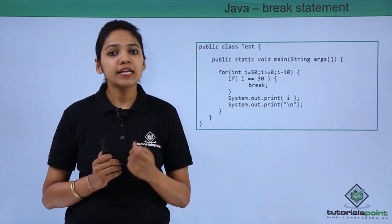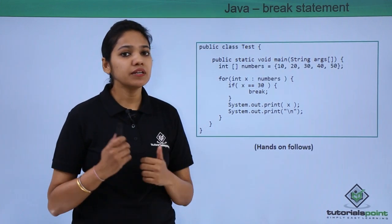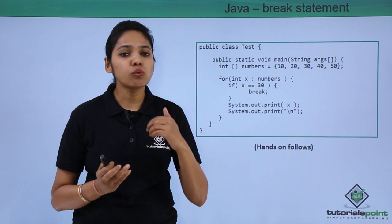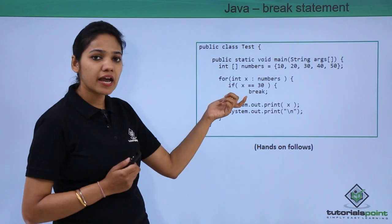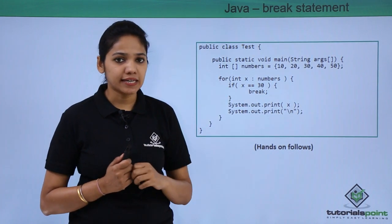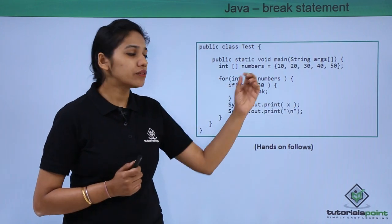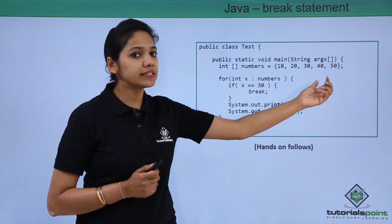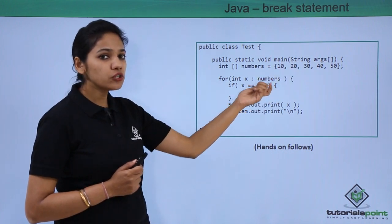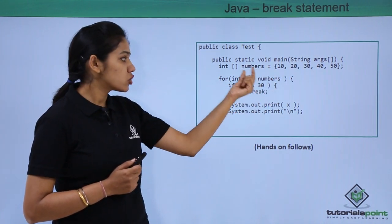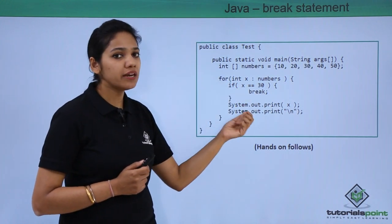In order to understand the break keyword further, let us take another example. This example is of an enhanced for loop — we will see in the future what an enhanced for loop is. Under the class Test, we have created an array of integers with values 10, 20, 30 and so on. What we are trying to do is fetch each element of the array, store it in a variable of integer type, then compare and execute.